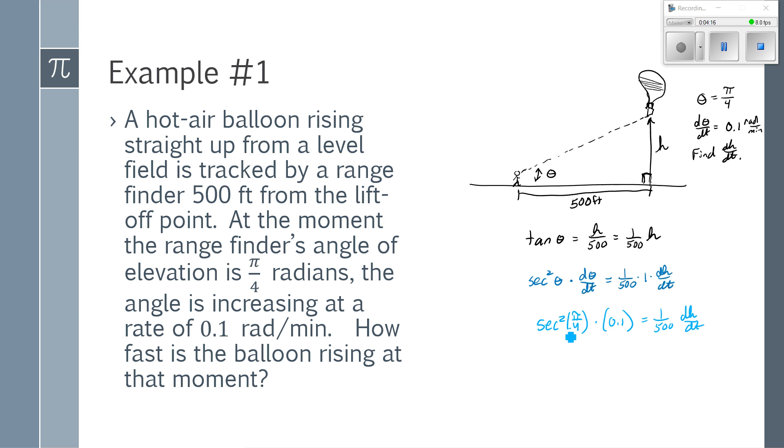While the secant squared of π over 4 is 1 over cosine squared of π over 4, cosine squared of π over 4 would be √2 over 2 squared, which is 2 over 4, which is half. The reciprocal of that is 2. So I have 0.2 times 1 over 500. I'm sorry, 0.2 is what I get when I do 2 times 0.1 equals 1 over 500 dh/dt.